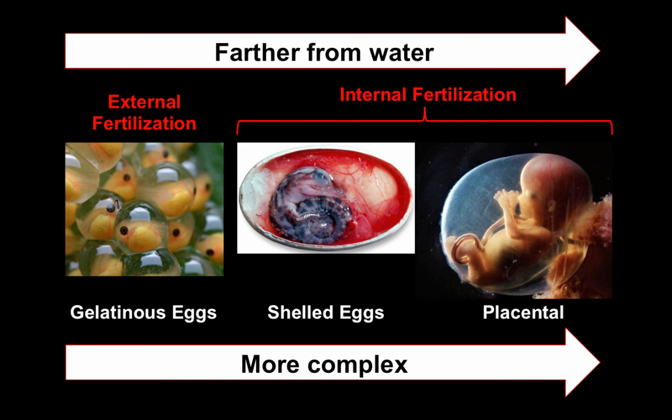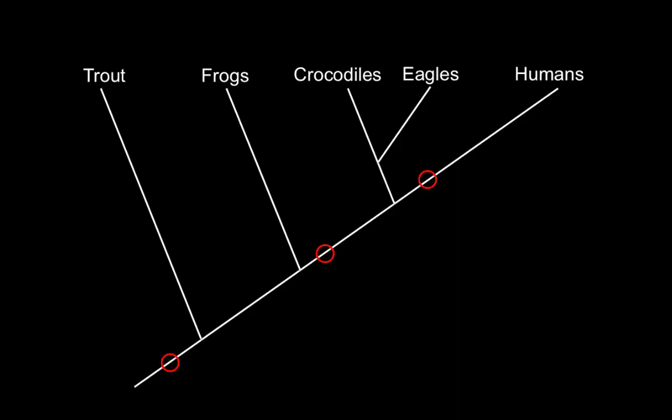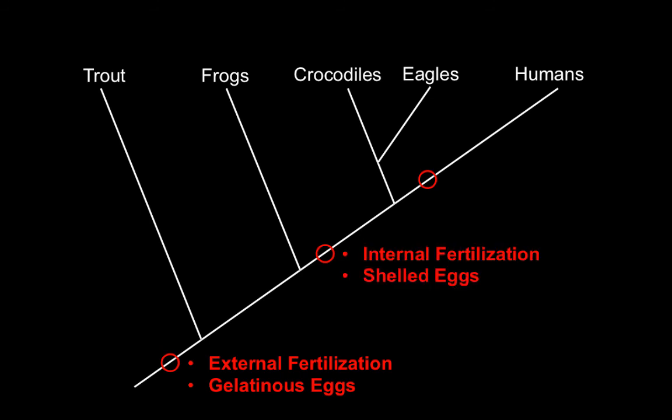We can have those very long gestation periods. So finally, if we look at this in a phylogenetic tree: external fertilization of gelatinous eggs with fish and amphibians, then we develop shelled eggs and have to do internal fertilization with reptiles and birds, and then finally we evolve the placental reproductive system with mammals.